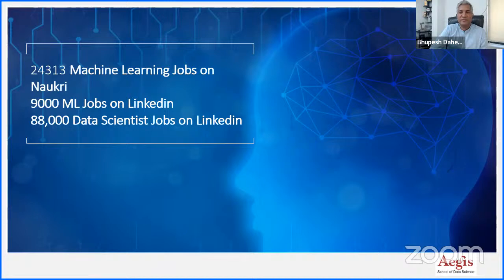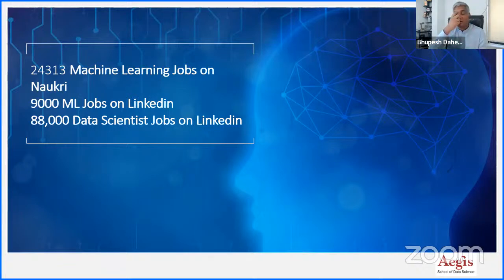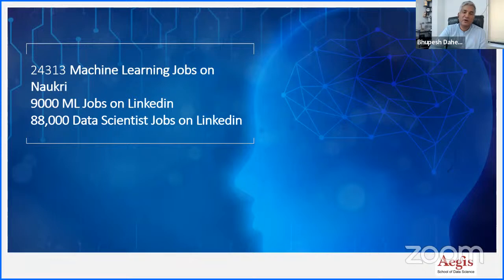Looking at jobs — there are almost 24,000 ML jobs available on Naukri, 9,000 ML jobs on LinkedIn, almost 88,000 data scientist jobs on LinkedIn, and 96,000 jobs for business analysts. Why do I keep all these jobs in one bucket? Because most of these jobs require one common skill set — machine learning.